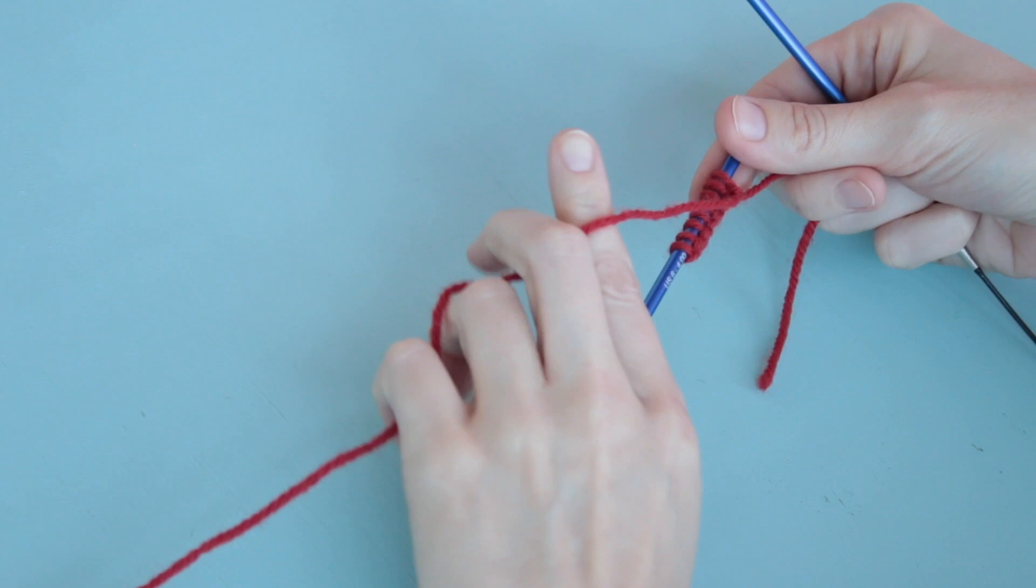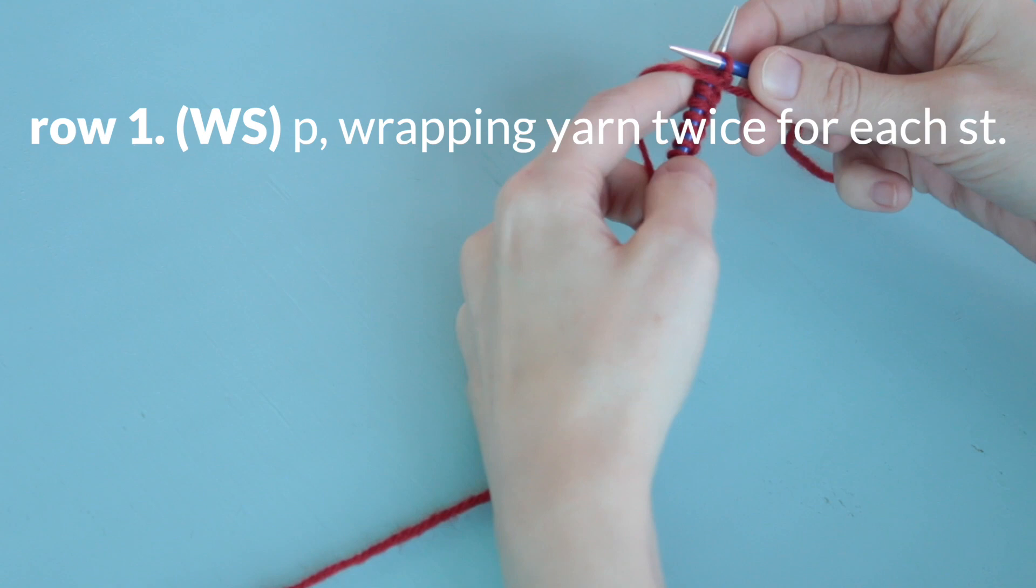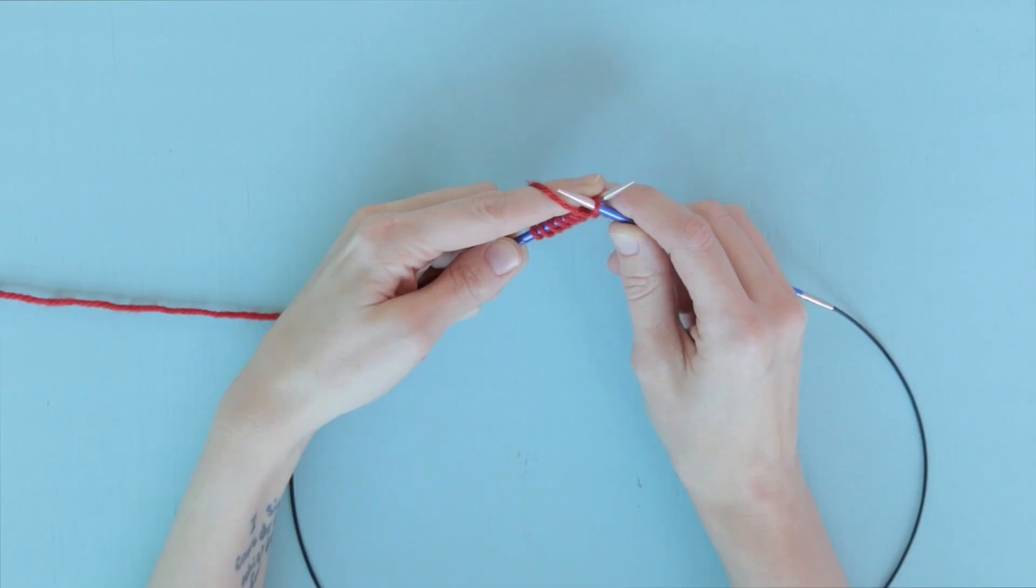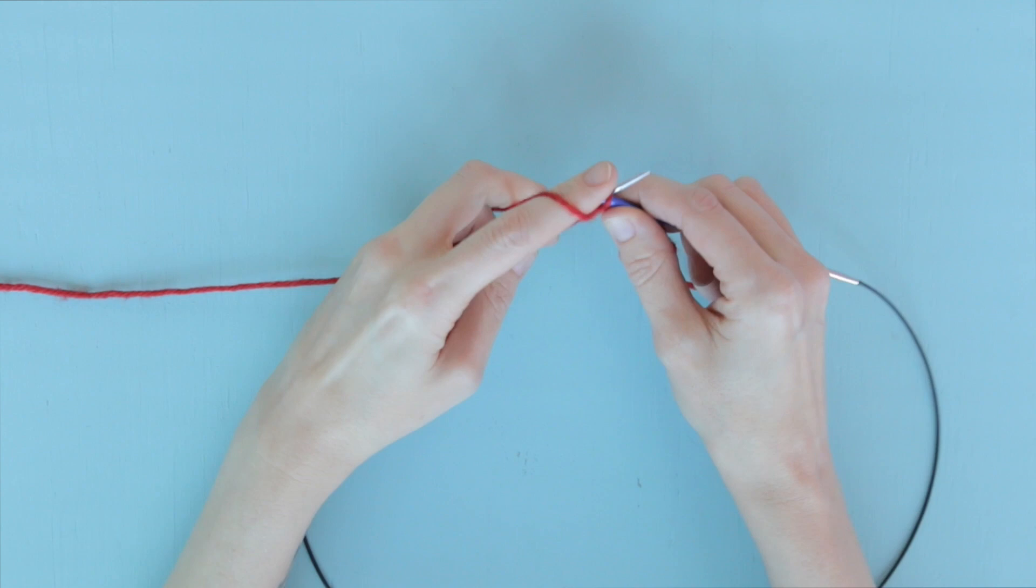Now we're going to insert our working needle into the front of the first loop, just like we are going to purl it normally. But every purl stitch of this wrong side row in the anemone stitch is worked with two wraps per stitch, so we wrap it once like we're working any purl stitch, but then we're going to wrap it a second time to get this stitch to work.